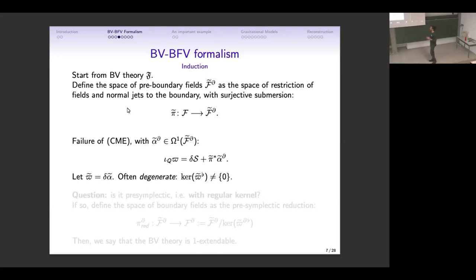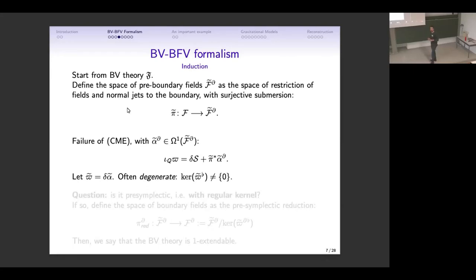An important point: we are taking normal jets to the boundary — there are no boundary conditions imposed. We keep boundary conditions free and see what structures they give us. Regarding the manifold: M is sigma cross [0,1], the interval, and sigma is closed and without boundary. For definiteness and simplicity, everything will be compact at the moment.